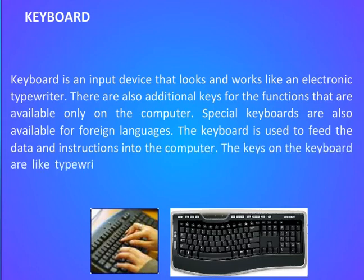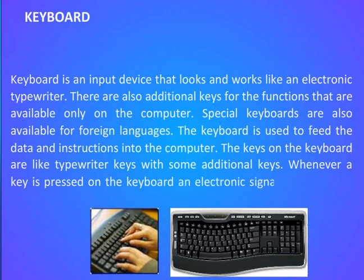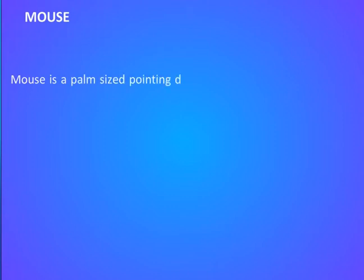The keys on the keyboard are like typewriter keys with some additional keys. Whenever a key is pressed on the keyboard, an electronic signal is sent to the CPU, and the CPU sends it to the monitor. Mouse — the mouse is a palm-sized pointing device that usually rolls on a small spherical ball and has one or more buttons on the top.